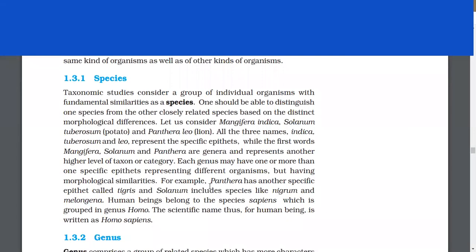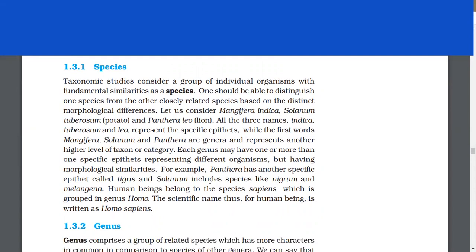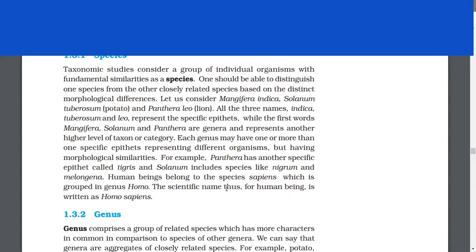Taxonomic studies consider a group of individual organisms with fundamental similarities as a species. One should be able to distinguish one species from the other closely related species based on distinct morphological differences. Let us consider Mangifera indica, Solanum tuberosum (potato), and Panthera leo (lion). All the three names - indica, tuberosum, and leo - represent the specific epithets.